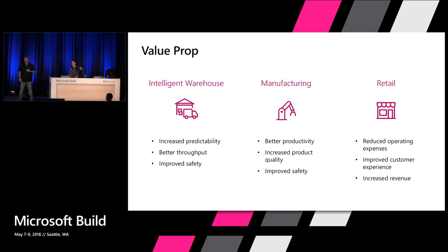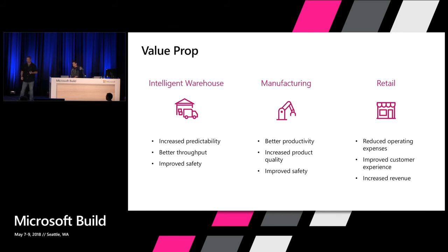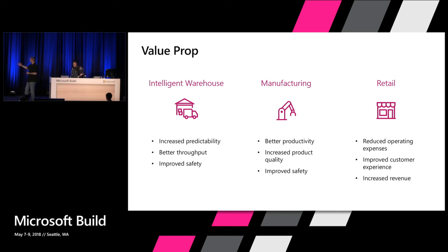These are industries where we see a lot of opportunity initially - industries that are undergoing rapid digital transformation, moving their analog processes to more digital ones. They have lots of process, lots of automation already, and a lot of them have expensive equipment that they want to do predictive maintenance on - they want to understand when things break down because they're mission critical, and when their lines shut down it costs them money. For intelligent warehouses: increased predictability, better throughput, improved safety. For retail: can we reduce operating expenses, improve the customer experience and increase revenue? These are all things customers will pay for.